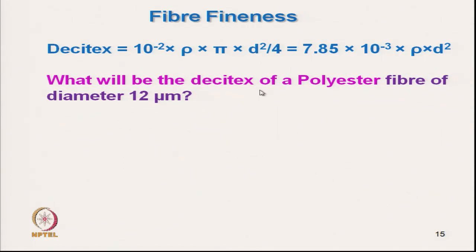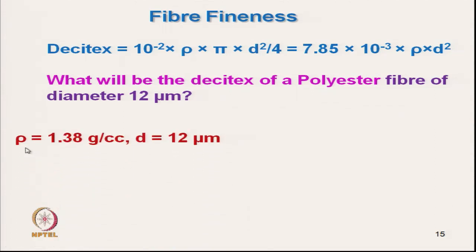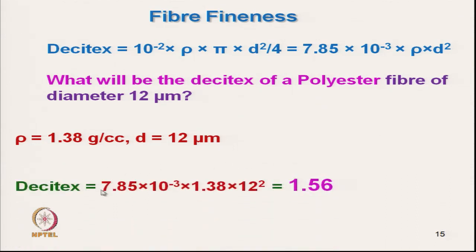Example: Calculate the decitex of a polyester fibre with diameter 12 microns. The density of polyester is 1.38 g/cc and diameter is 12 microns. Substituting into the decitex formula directly gives the decitex value. Such problems can be solved directly using the formula.